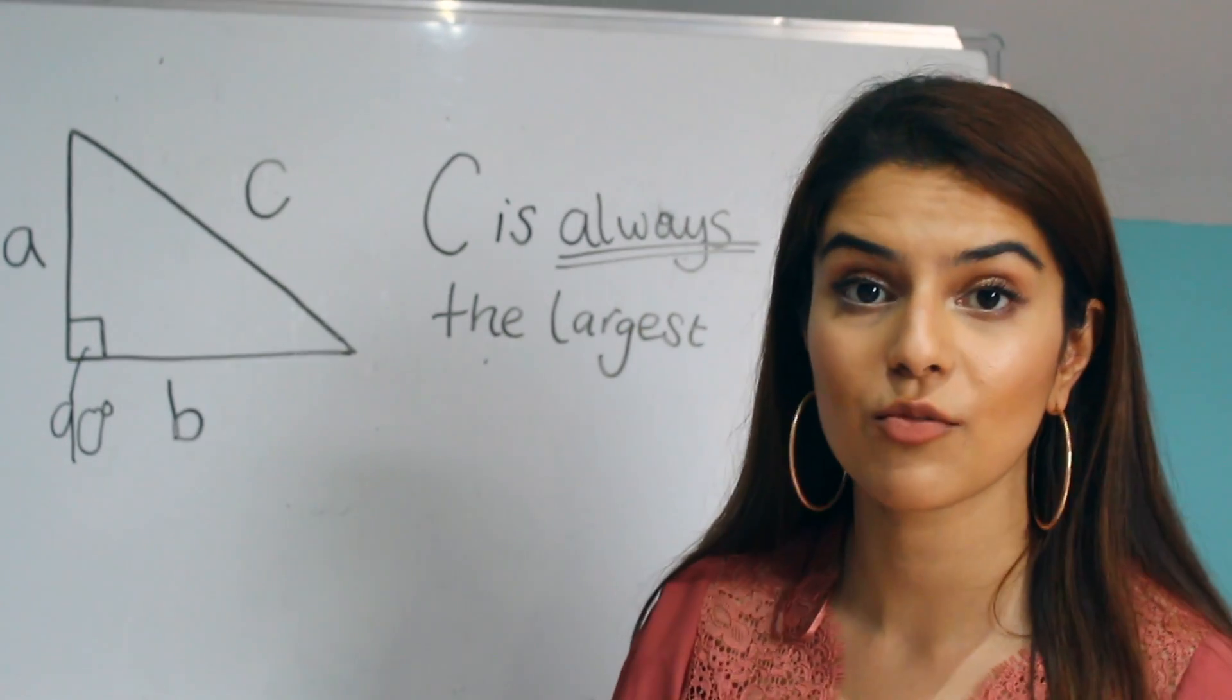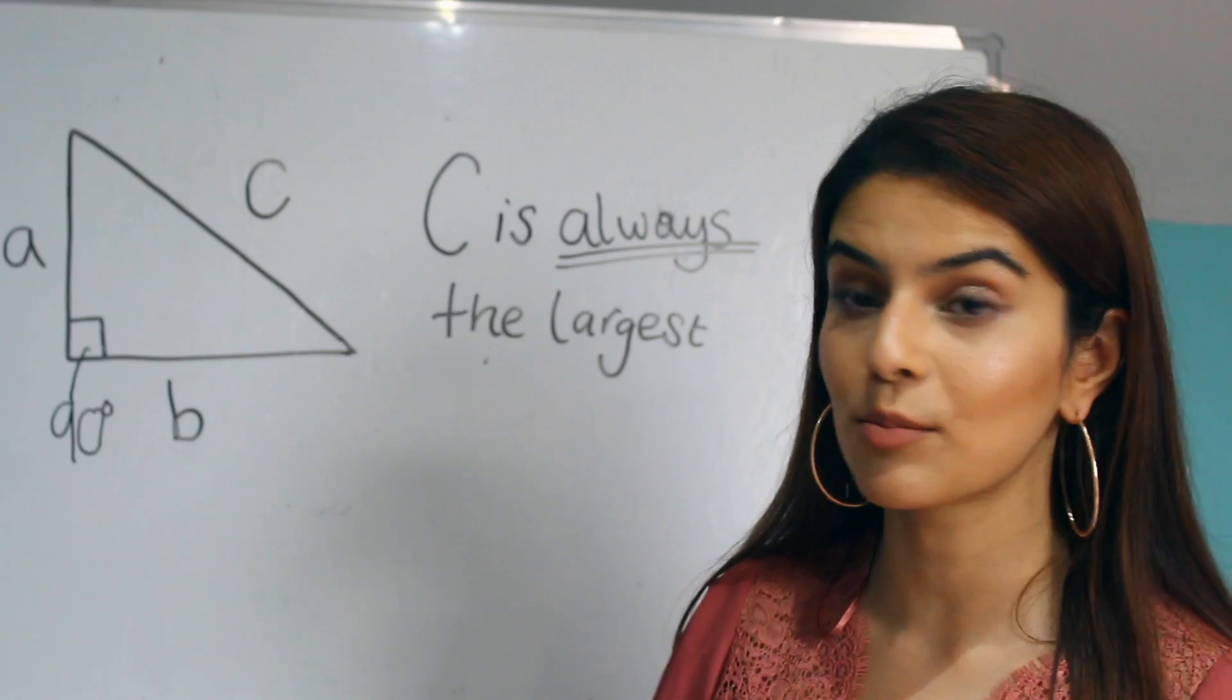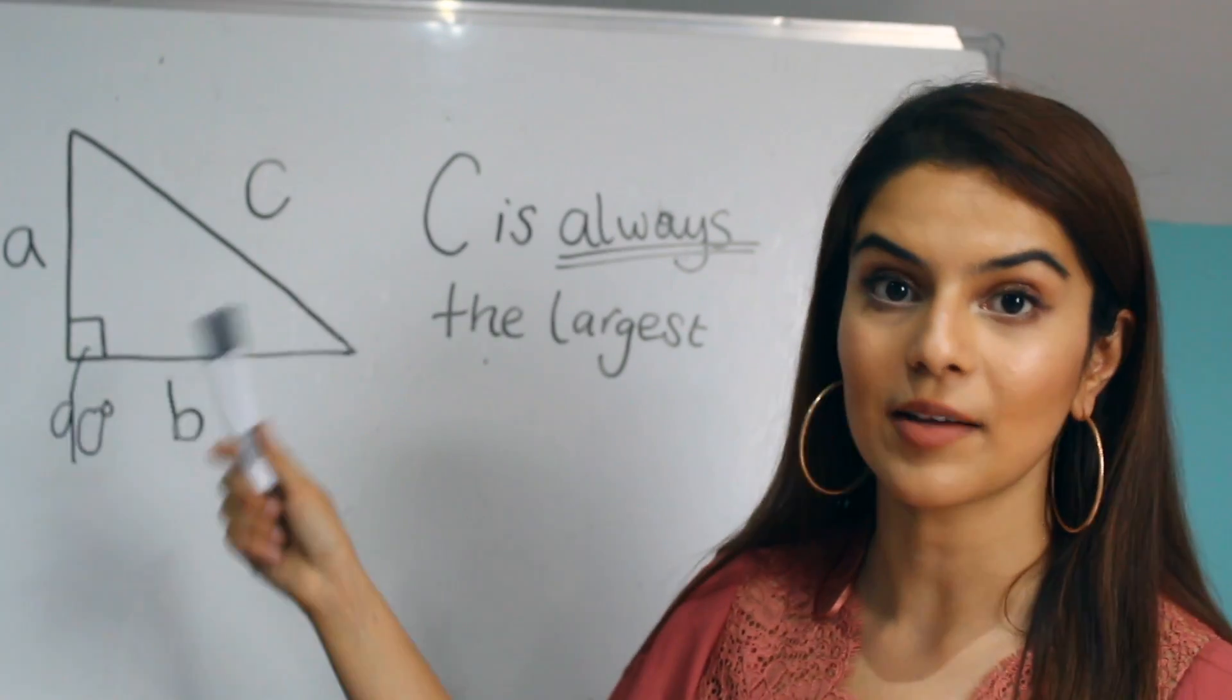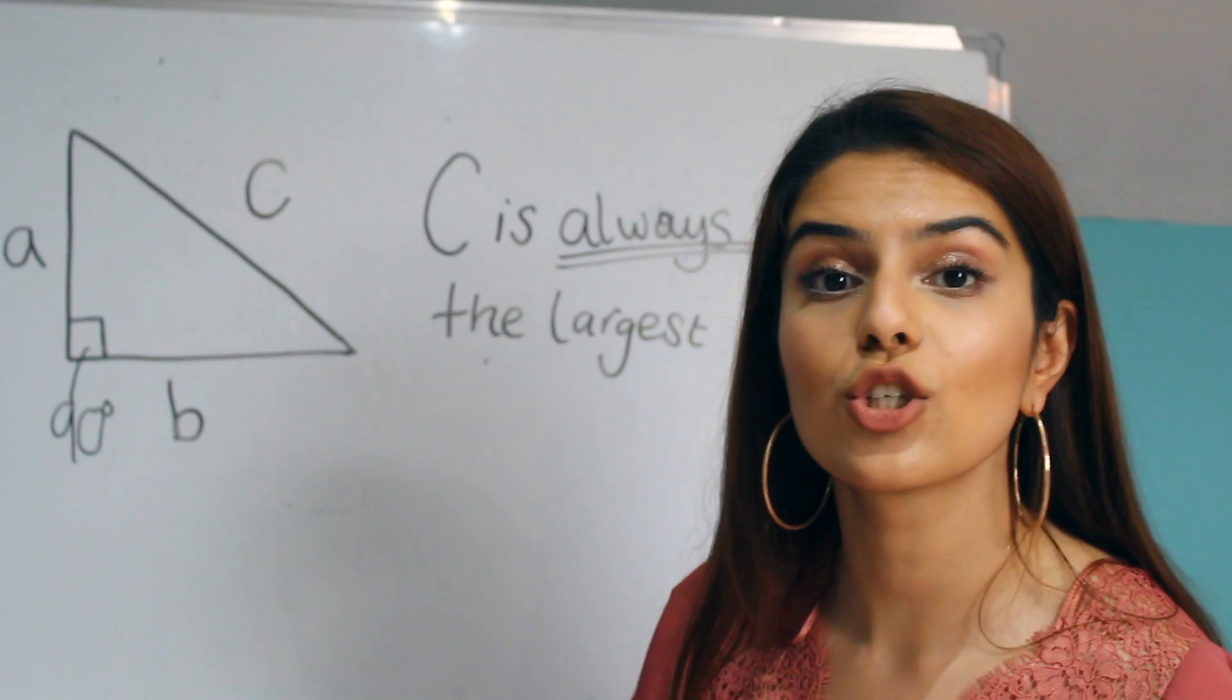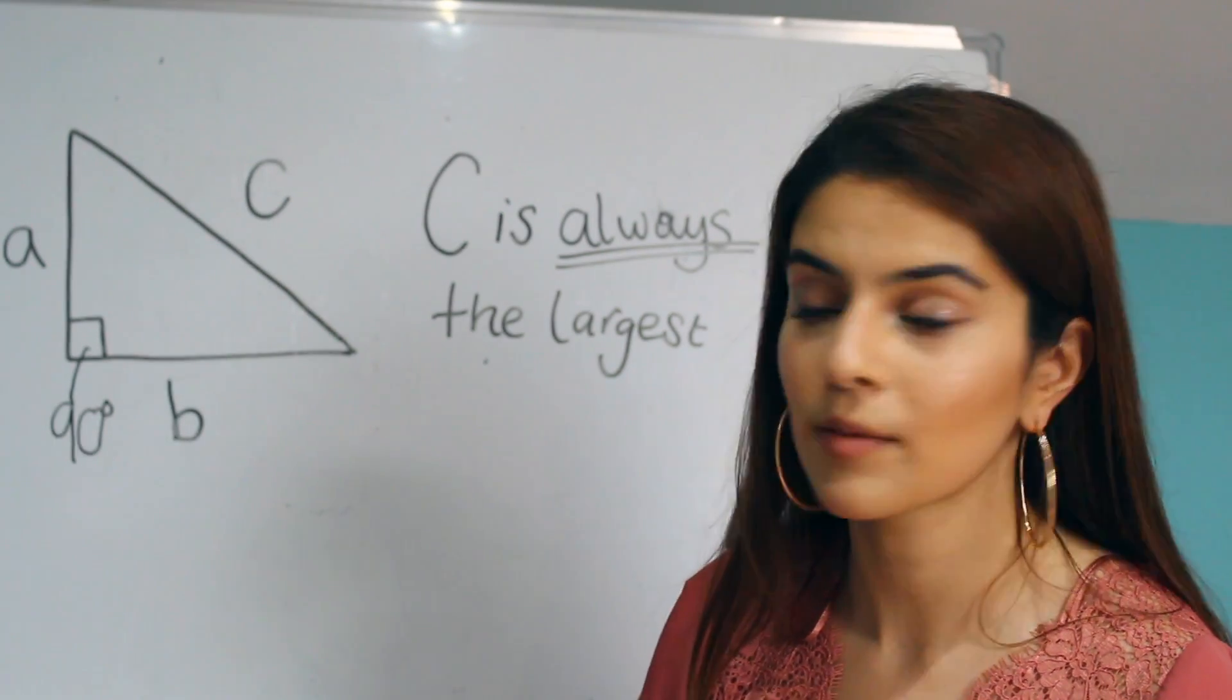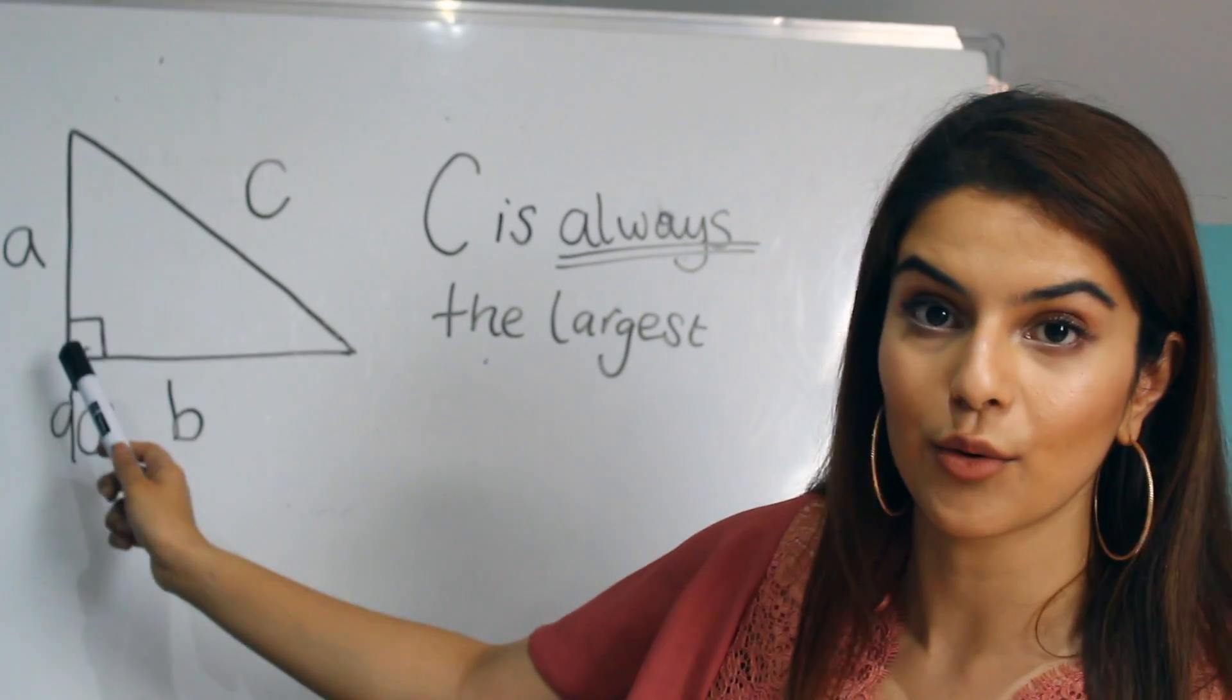It's usually labelled in the same format, having sides labelled A, B and C. C is always the longest side. And it's usually called the hypotenuse. The hypotenuse is usually opposite the right angle.